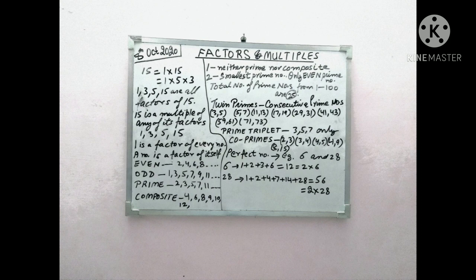Now we have to understand what are even numbers. Any number which is divisible by 2 or we can say all the multiples of 2 are called even numbers. For example, 2, 4, 6, 8, 10, 12, etc.